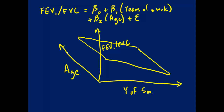If age has no effect, the line is parallel to age in both directions. But what we would actually expect is that the FEV1 to FVC ratio goes down with age. So what our plane is going to look like is something sloping downwards with age and also downwards with years of smoking — going back down and away from this corner.